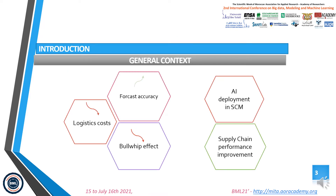I would like to give some background information about supply chain management, which is a complex system representing a competitive challenge that companies are facing. Supply chain management encompasses the planning and management of all activities involved in sourcing, procurement, conversion, and all activities related to logistics management. Intelligent technology brings great opportunities and serious challenges to the high-quality development of the manufacturing industry.